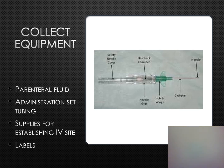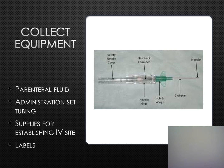Inspect the fluid for clarity and absence of any particulate matter. Gather the appropriate administration set tubing — it must be appropriate for the ordered therapy and will indicate the drop factor. Check the integrity of the package; if compromised, dispose of it and get a new one. Gather the cannula with the gauge appropriate for the therapy ordered and the age of the client. Make certain you have more than one cannula available in case venipuncture requires more than one attempt.